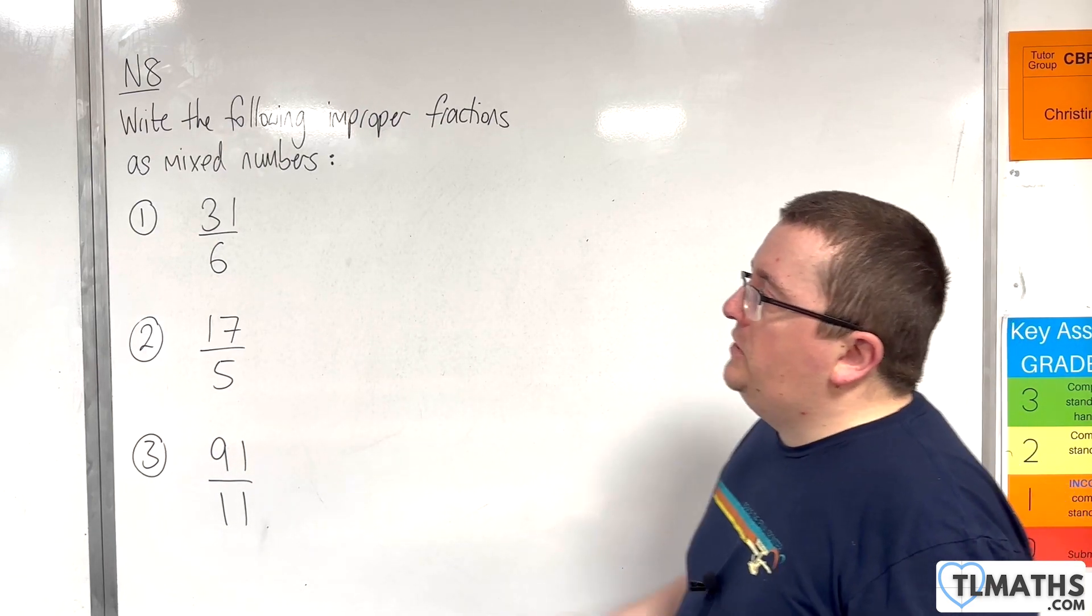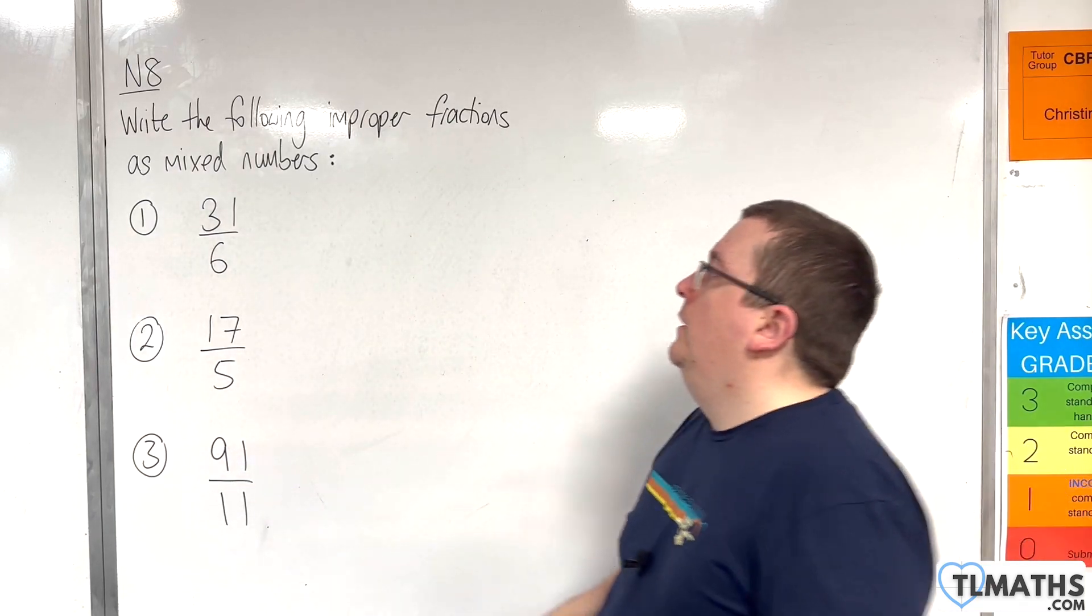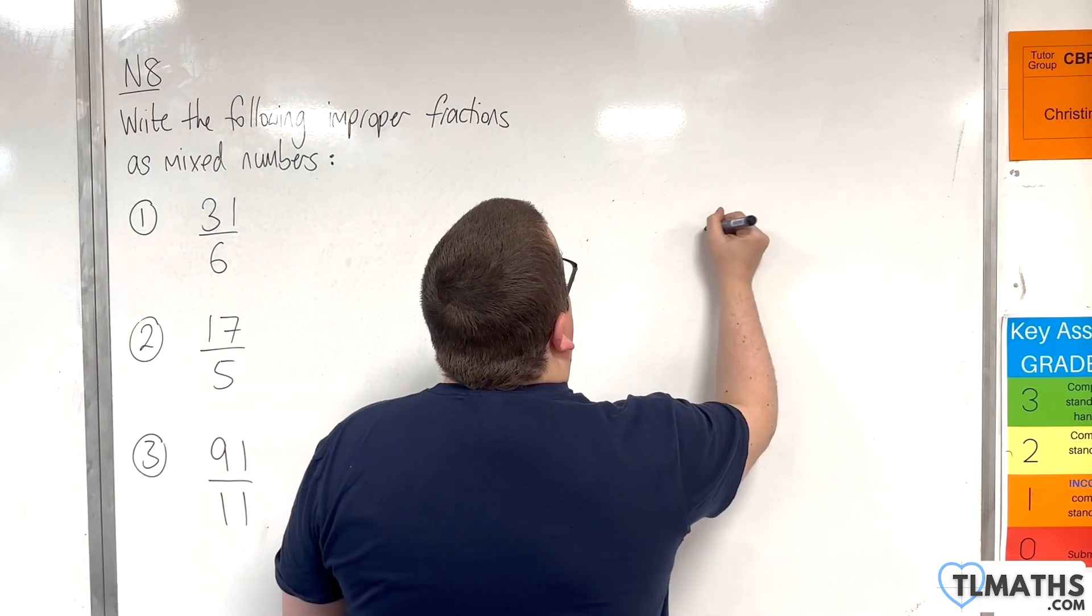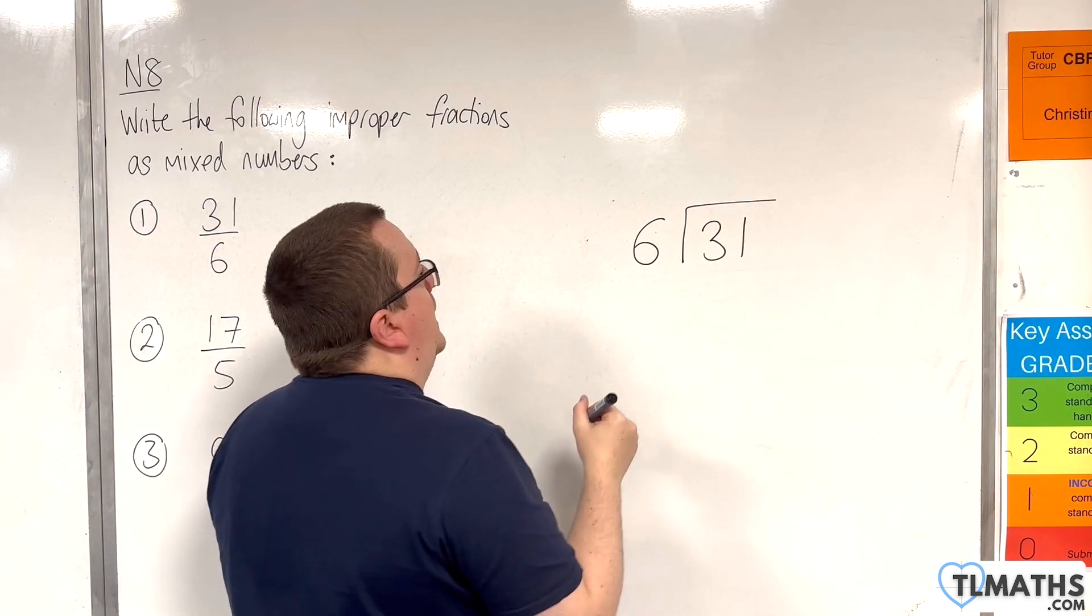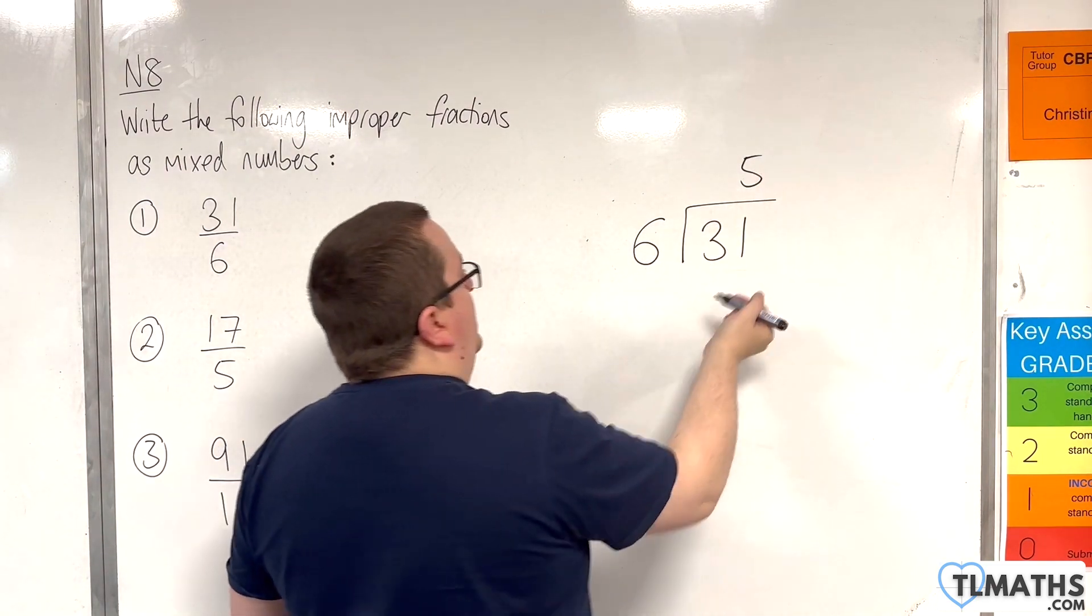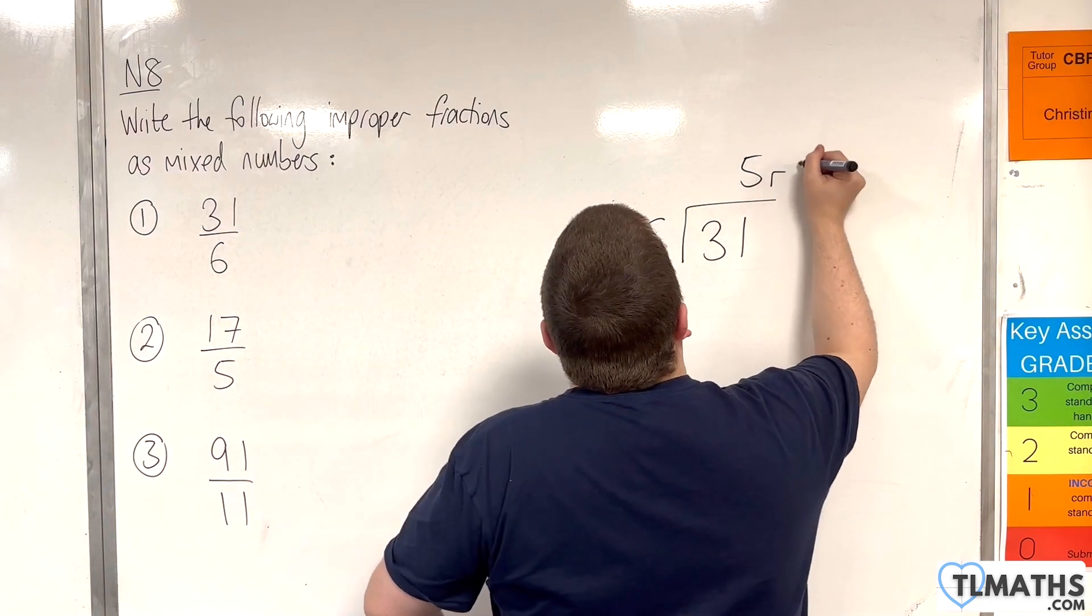In our first example, we have 31 over 6. We want to determine how many 6s go into 31. That will be 5, because 5 6s are 30, and we have a remainder of 1.